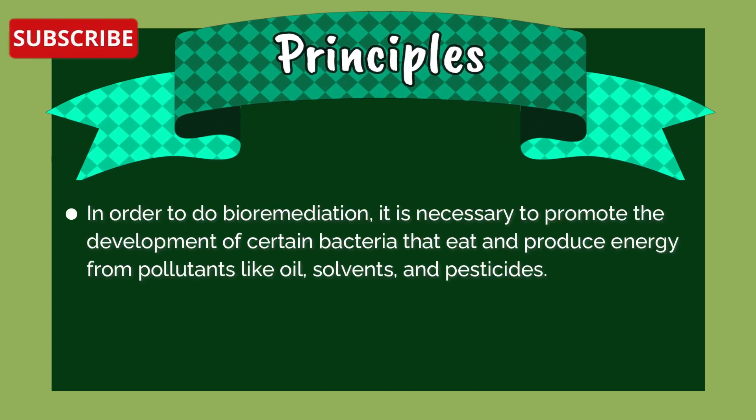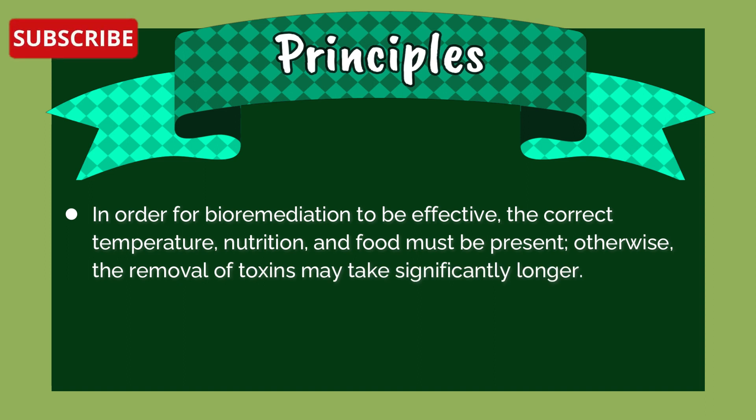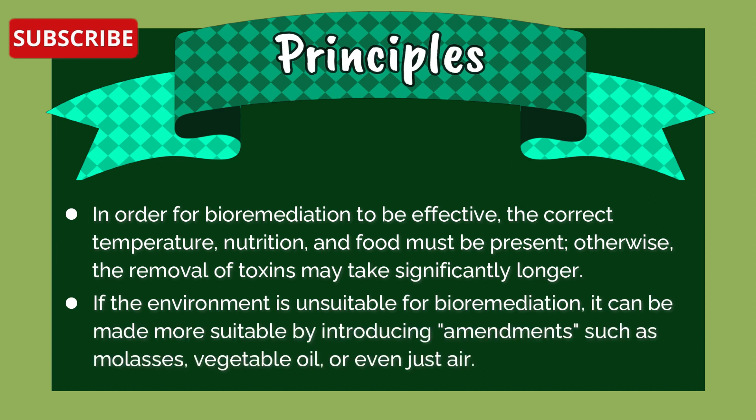The principle of bioremediation involves promoting the development of certain bacteria that eat and produce energy from pollutants like oil, solvents, and pesticides. These microorganisms devour the pollutants and break them down into innocuous gases like carbon dioxide and tiny quantities of water. For bioremediation to be effective, the correct temperature, nutrition, and food must be present; otherwise the removal of toxins may take longer.